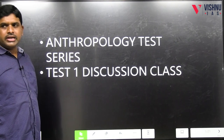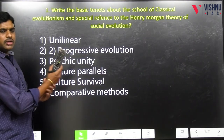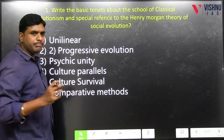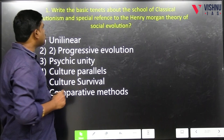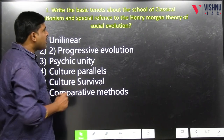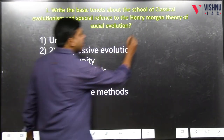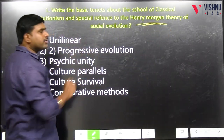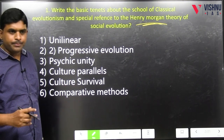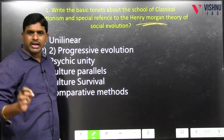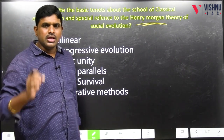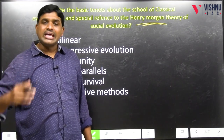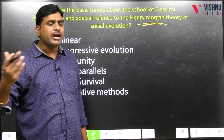Today we will be discussing Test 1. The first question: write the basic tenets, basic features, basic characteristics about the school of Classical Evolutionism with special reference to Henry Morgan. Classical Evolutionism is the first school of evolutionism — it is 19th century evolutionism, the early school which discussed the evolutionary pattern of culture.